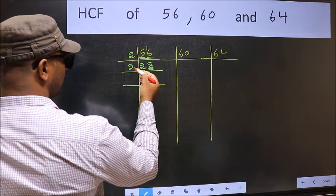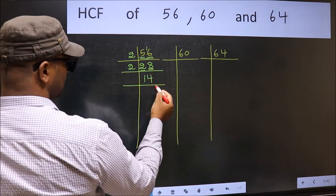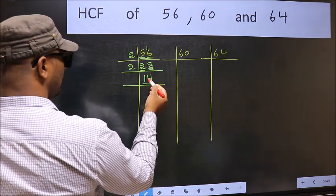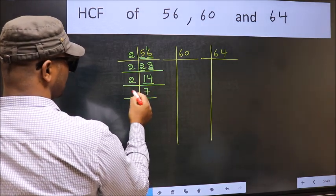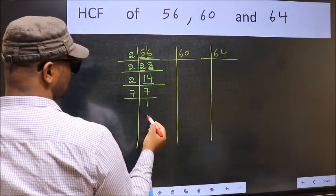The other number 8. When do we get 8 in 2 table? 2 times 4 is 8. Now here we have 14. 14 is 2 times 7 is 14. Now 7, 7 is a prime number, so 7 times 1 is 7.